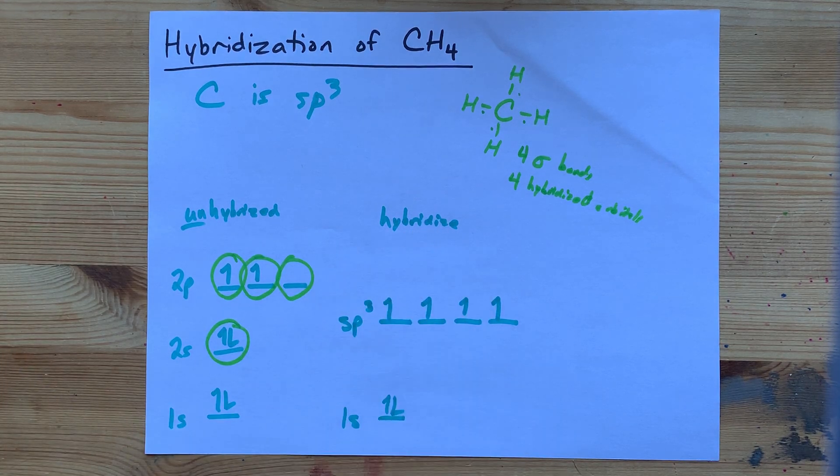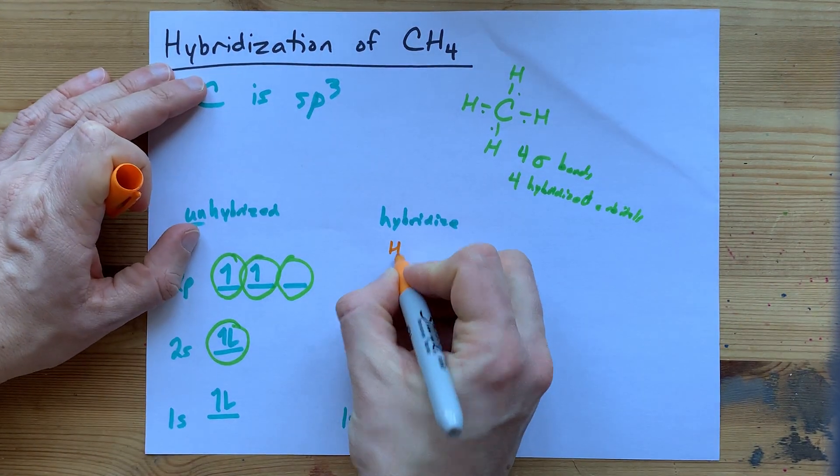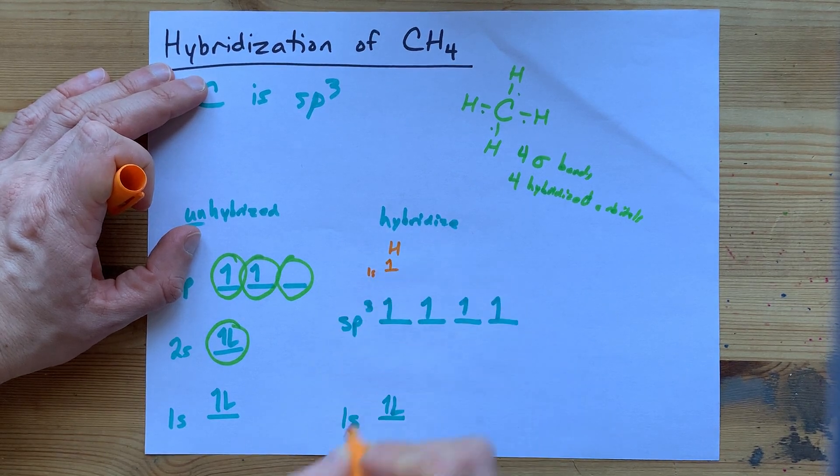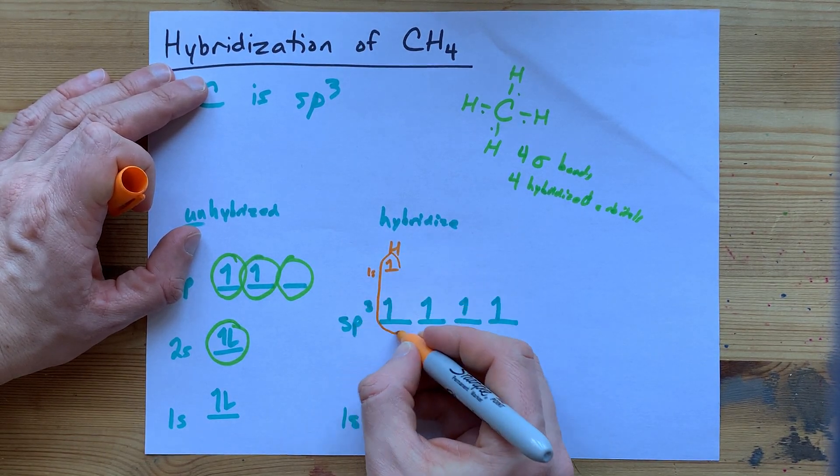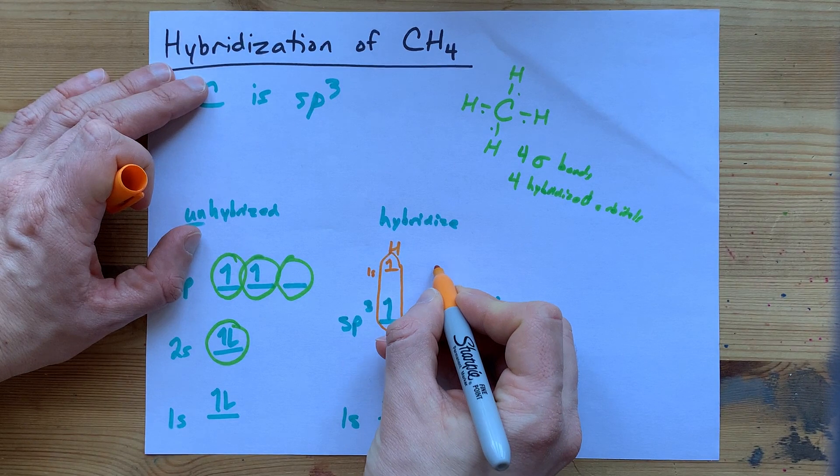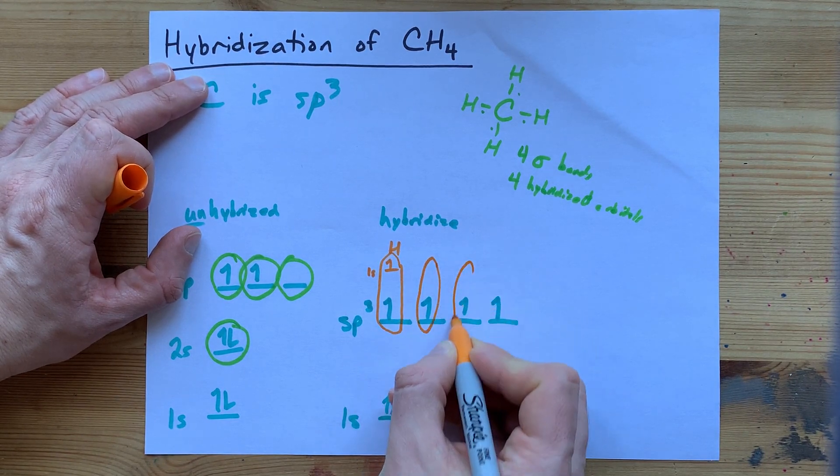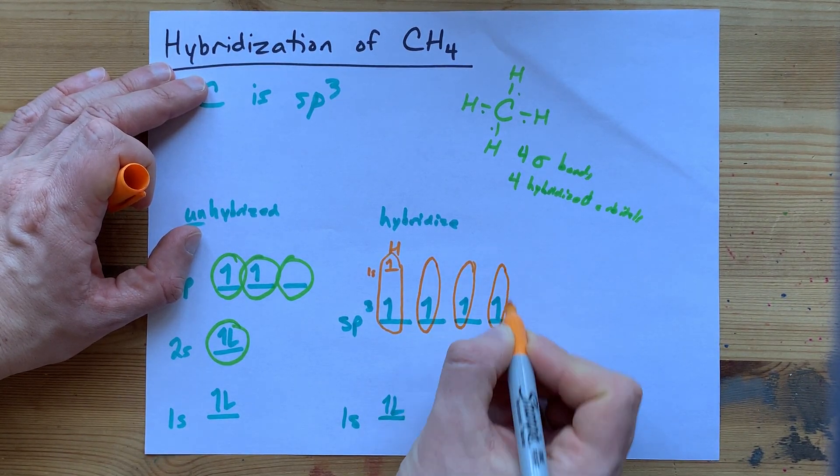It's probably obvious that one of the hydrogens with its 1s orbital will combine to make a sigma bond with that one, another hydrogen with that one, another hydrogen with that one, another hydrogen with that one.